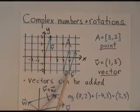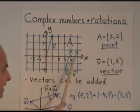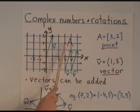and a vector, like this one here, the vector 1, 3. A vector is a directed line segment, while a point, of course, is just a dot.